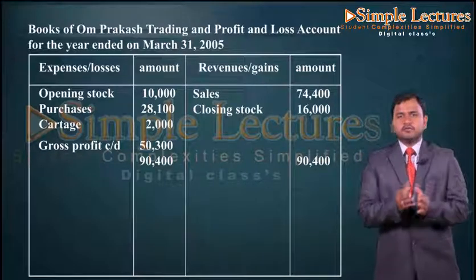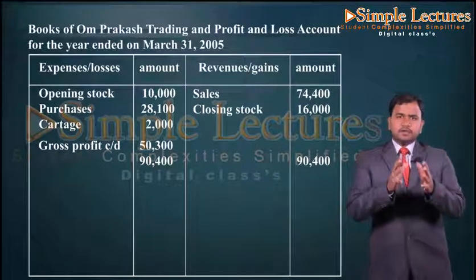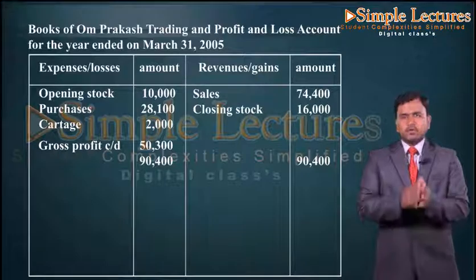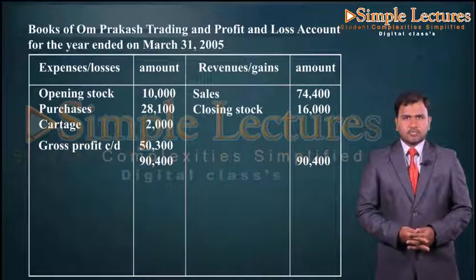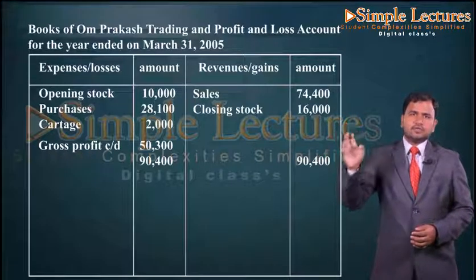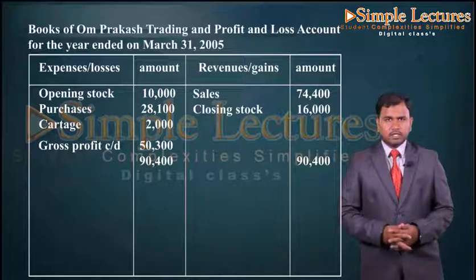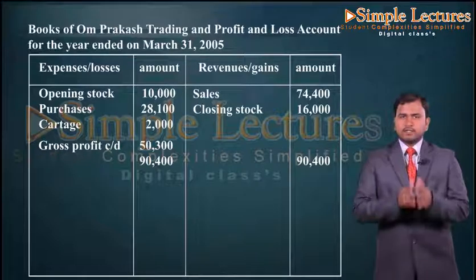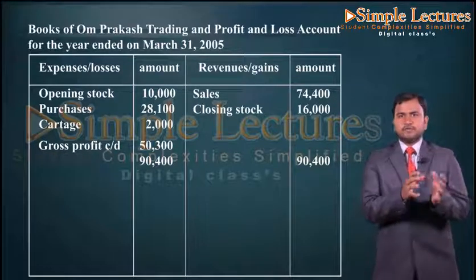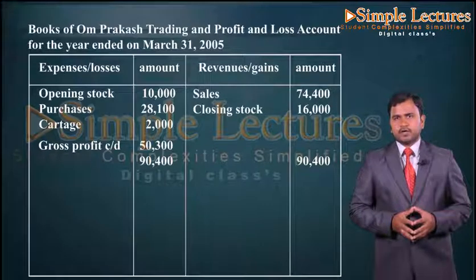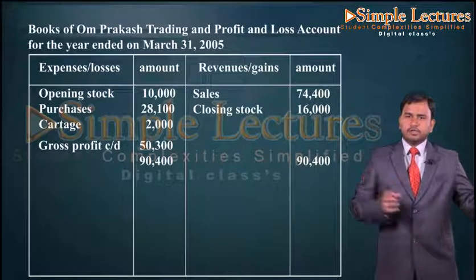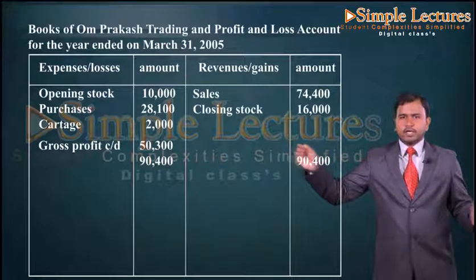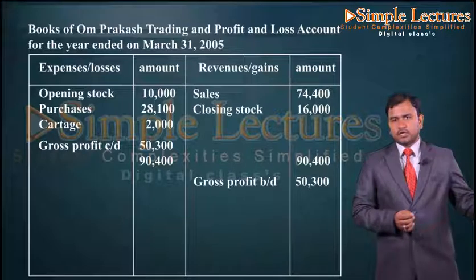The same nominal account rule is followed in the profit and loss account: debit all expenses and losses, credit all incomes and gains. The difference from the trading account is that the trading account records direct expenditures incurred in production, while the profit and loss account records all indirect expenses and indirect incomes not incurred in production. Gross profit carried down was fifty thousand three hundred on the debit side and is brought down to the credit side: gross profit brought down fifty thousand three hundred.